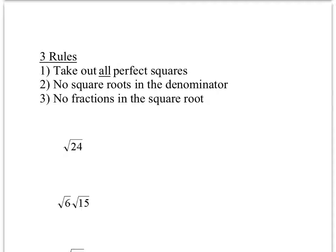We're going to be simplifying square roots using three rules. Rule 1: take out all perfect squares—find any perfect square factor and remove it. Rule 2: no square roots in the denominator—that's a no-no. Rule 3: no fractions inside the square root. If it doesn't simplify cleanly like 4/9, I'll show you how to handle the other cases. Write all three rules in your notes.